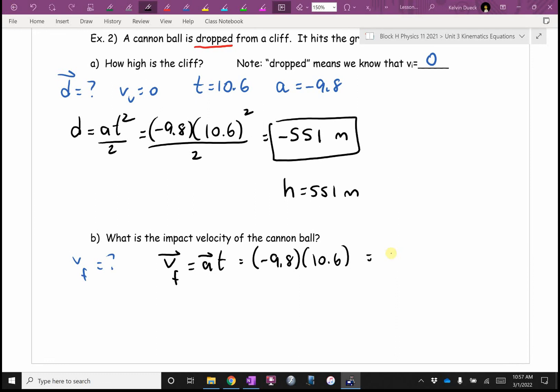I should point out, we're ignoring air resistance, and a cannonball won't have much, but this cliff is high enough that air resistance in real life would actually skew these numbers. So these numbers aren't quite accurate, but we're going to ignore air resistance. Was there a question? Next page.